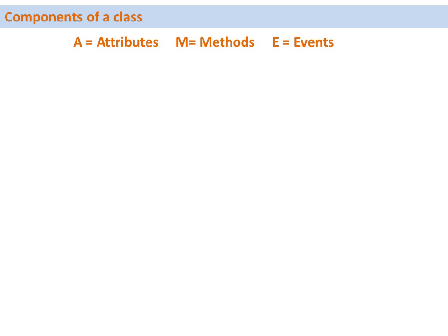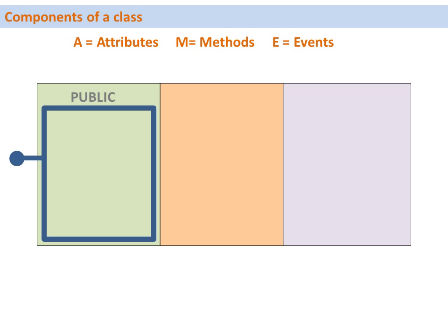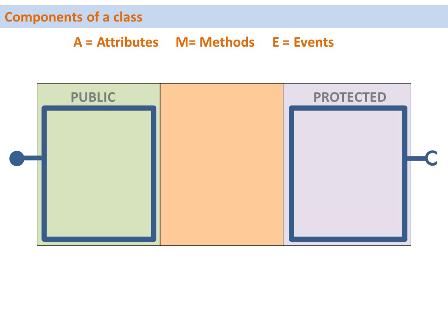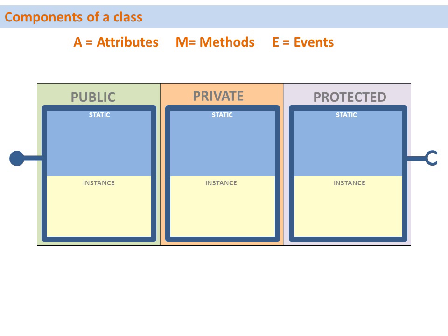Let's have a closer look at the components of a class. A class has attributes, methods and events. A class has three different visibility sections: public, protected and private. Within each visibility section it's possible to have the components of the class — attributes, methods and events — as static components or instance components.